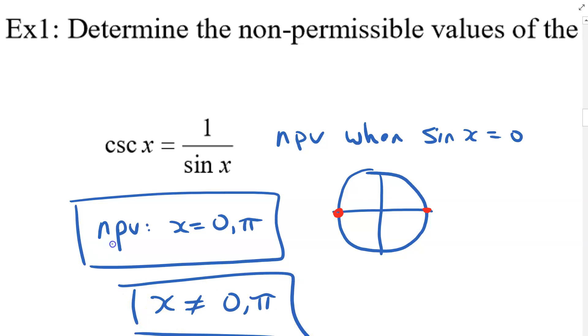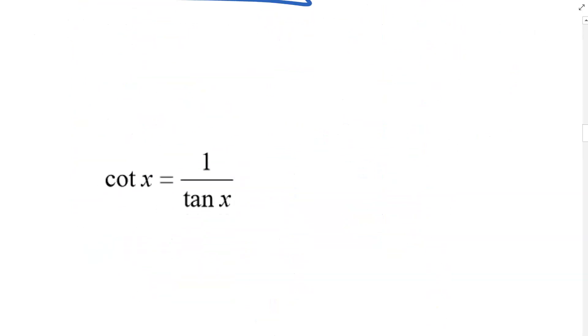So both ways are fine. You could say x is not permitted to be zero and pi, or another way of saying is x cannot be equal to zero or pi. All right, let's try a second example here.